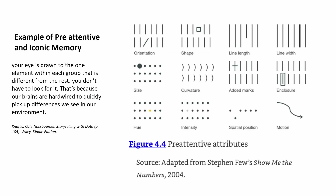So we have pre-attentive iconic memory attributes that we can use to create better visualizations. These include orientation — if one element is different from others, it attracts audience attention — as well as shape, line length, line width, enclosed marks, curve weight, size, color, and motion. All of these help us quickly pick up differences in our visualizations.